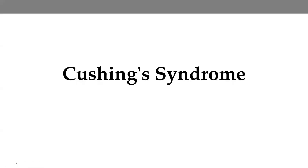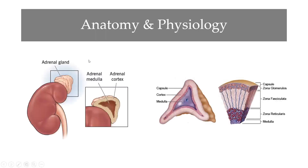We are going to look at a very important endocrine disorder: Cushing's syndrome. Before we delve into the matter, we need to review some anatomy. Cushing's syndrome occurs as a result of a problem with a hormone produced from the adrenal gland. The adrenal gland is located on top of the kidneys, and in cross-section we can see it has an innermost layer called the adrenal medulla and an outermost layer called the adrenal cortex.